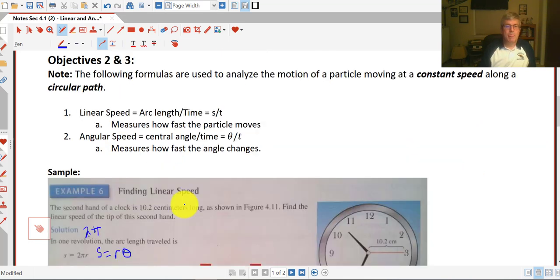Objectives 2 and 3: we are going to explore linear speed and angular speed. Before we get started on that, we'll read our note here. The following formulas are used to analyze the motion of a particle moving at a constant speed along a circular path.